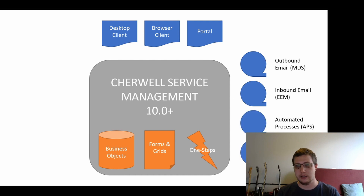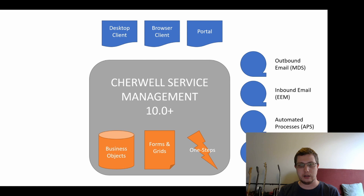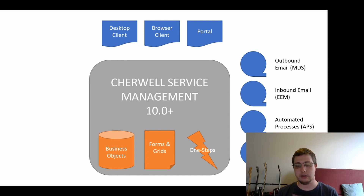In addition to that, there are ways to automate processes offline. In addition to some automated actions that can be defined through OneSteps that can happen in real time as data is manipulated within the system, there's offline batch processing through automation processes via the automated process server, or truly scheduled processes that happen once a night, once a week, or on some periodic basis through the scheduled process.